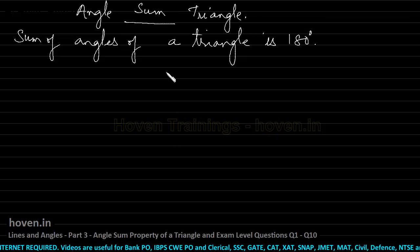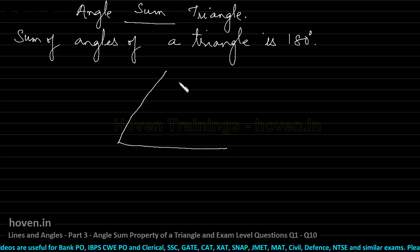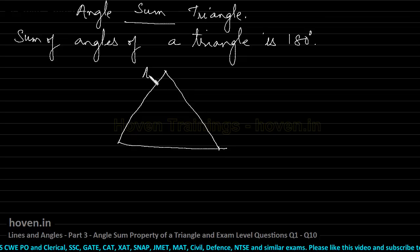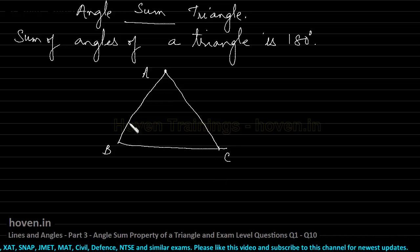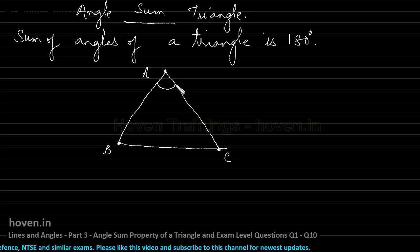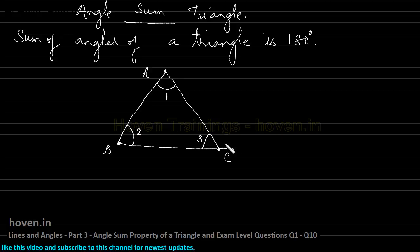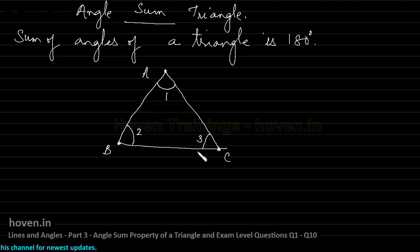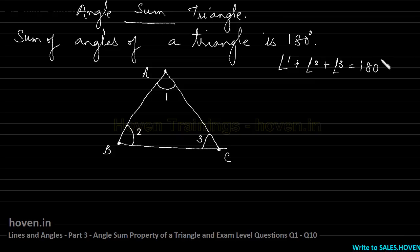To prove this, let us draw any triangle, labelled with vertices A, B and C. We can also label these angles as 1, 2 and 3. By looking at this triangle, it is definitely very difficult to think about how we will be able to prove that angle 1 plus angle 2 plus angle 3 is always equal to 180 degrees.